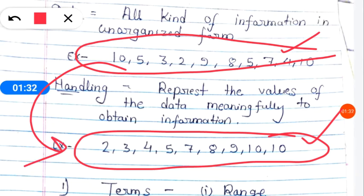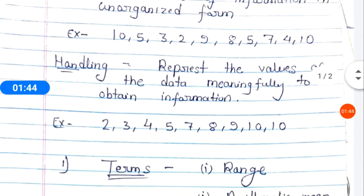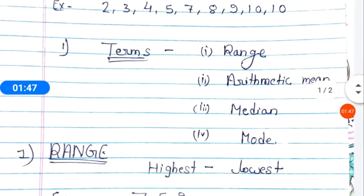But when we arrange them in an organized form, then we can easily collect information from it. Like how many students got the lowest marks, how many students gained highest marks, how many students got the same marks. These all things we can get from it.